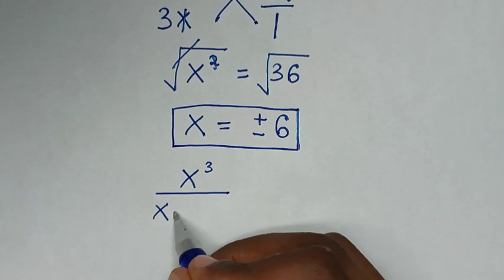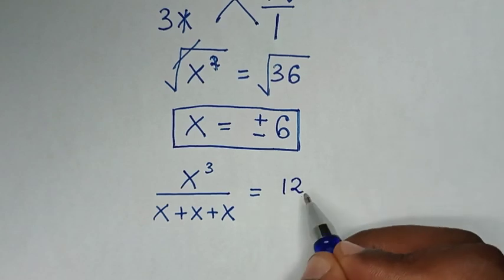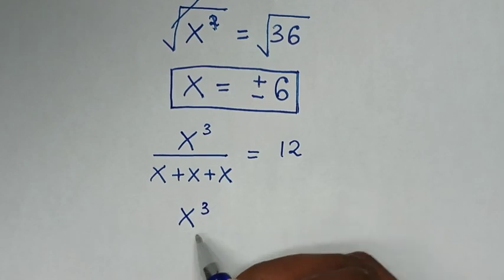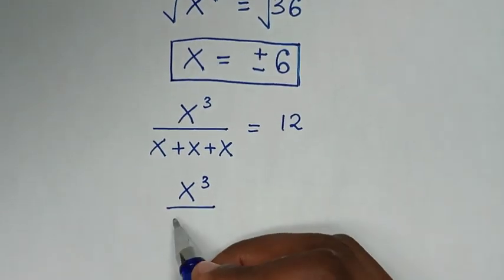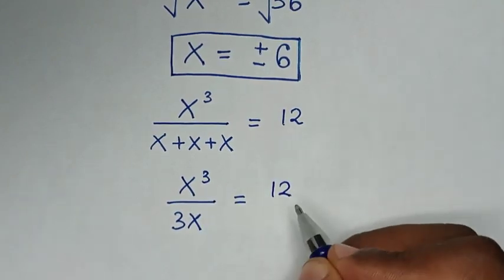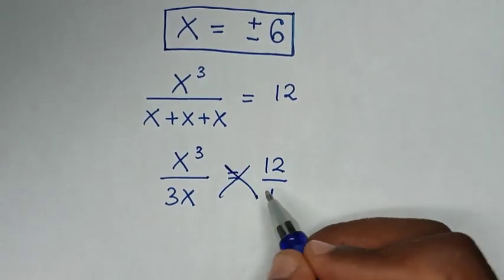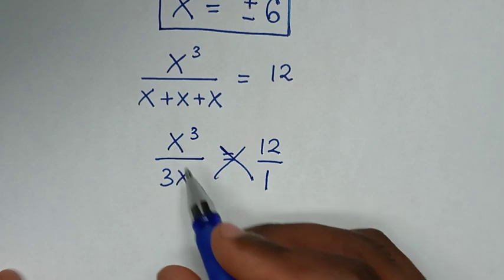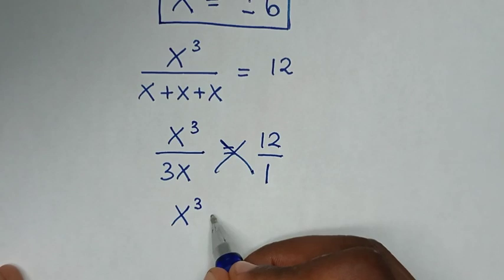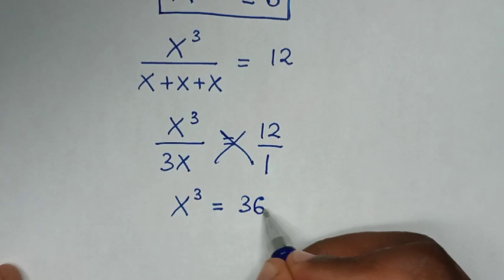Or to solve in another method — from our problem x power 3 over x plus x plus x is equal to 12, it will be x power 3 over 3x is equal to 12. Then 12 is the same as 12 over 1, and we'll cross multiply. It will be x power 3 times 1 is x power 3, equal to 3x times 12 is 36x.